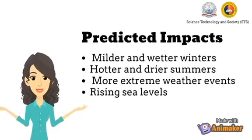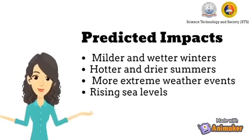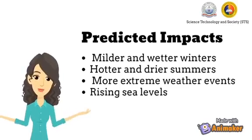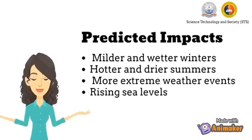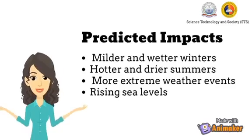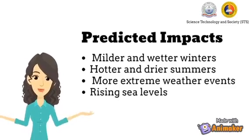Predictive impacts include milder and wetter winters, hotter and drier summers, more extreme weather events, and rising sea levels.